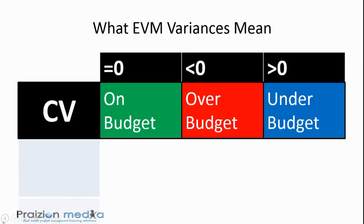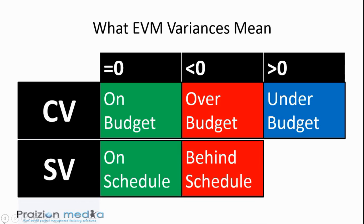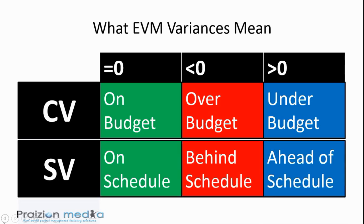Looking at the schedule variance, if your schedule variance is equal to $0, it means you are on schedule. Less than $0, you are behind schedule. And greater than $0, it means you are ahead of schedule.